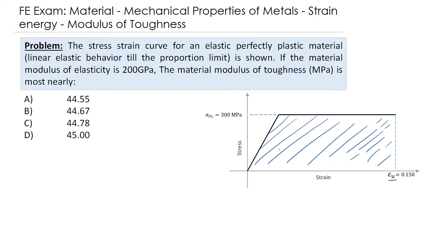For an elastic perfectly plastic material, there is a linear region associated with the strain at the plastic limit. When stress reaches the proportional limit, the strain energy density is the modulus of resilience — that triangular area on the diagram. In order to find the modulus of toughness, we need the full area, which includes the modulus of resilience plus the rectangle beyond it.